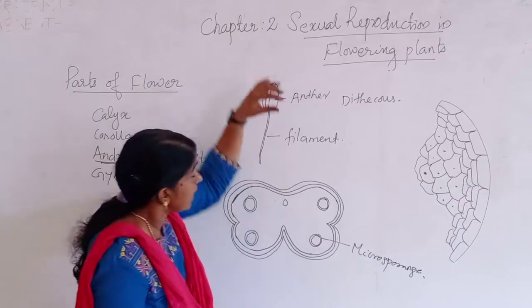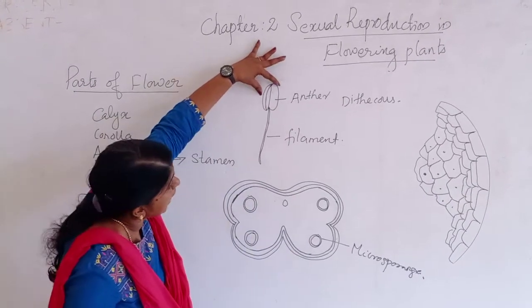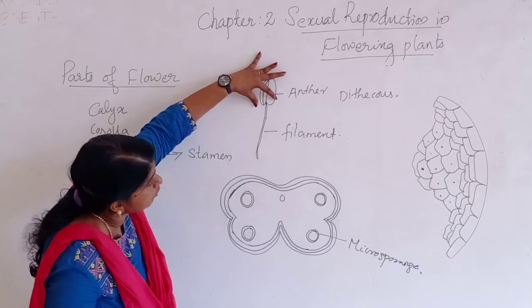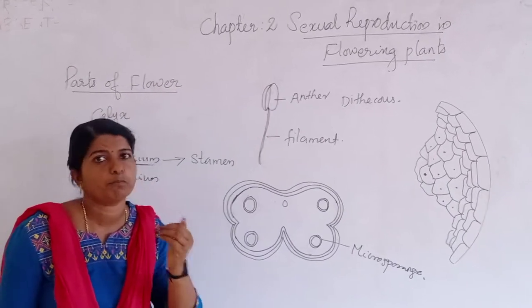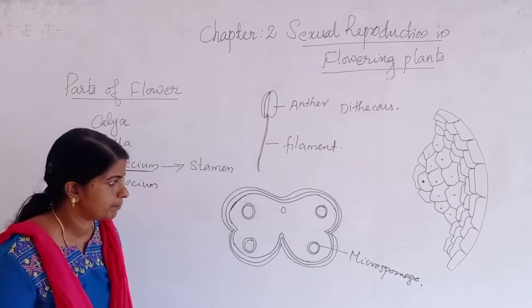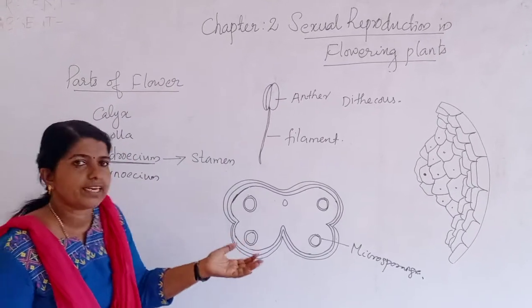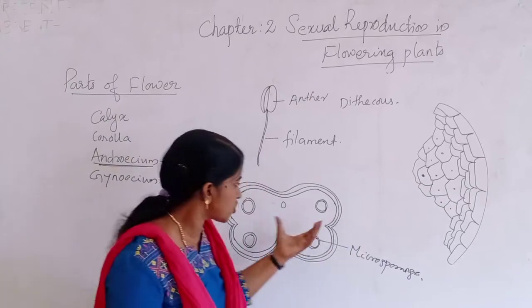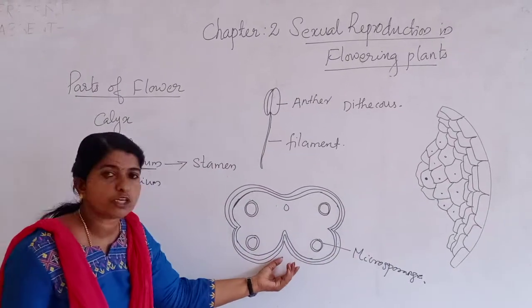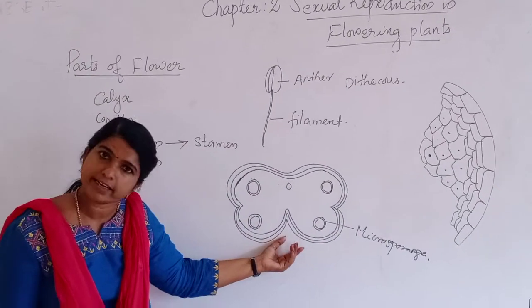This microsporangia later develops and becomes a pollen sac. The pollen sac spans the entire length of the anther and is filled with pollen grains. Now let us study the structure of microsporangia in detail.